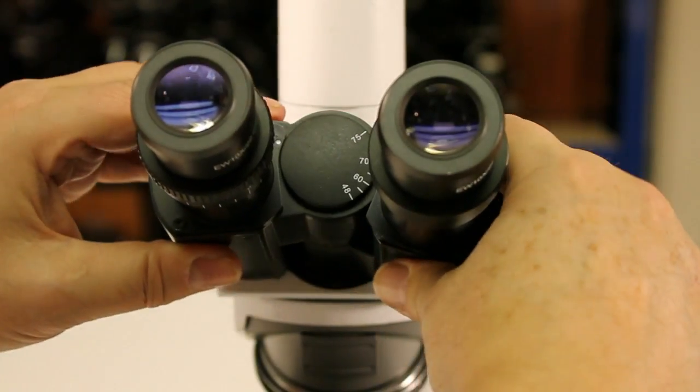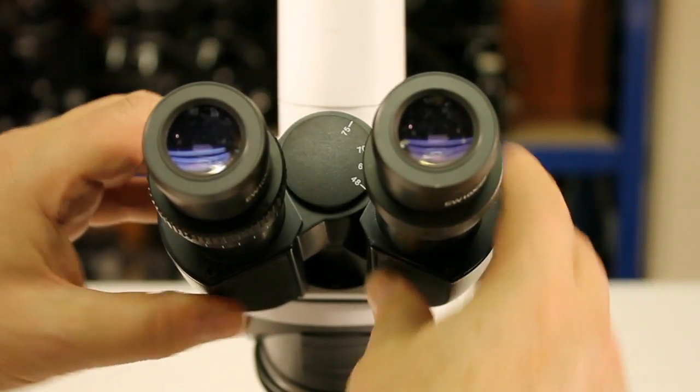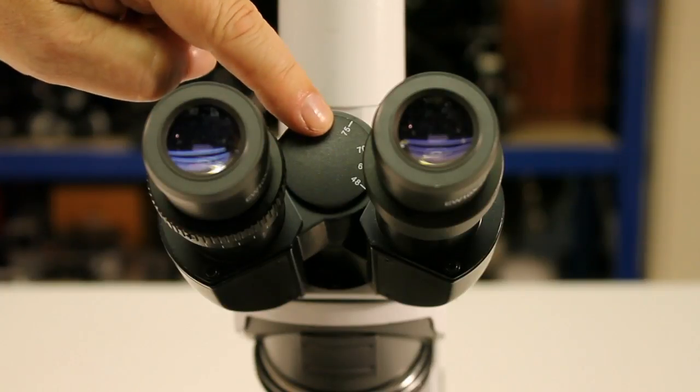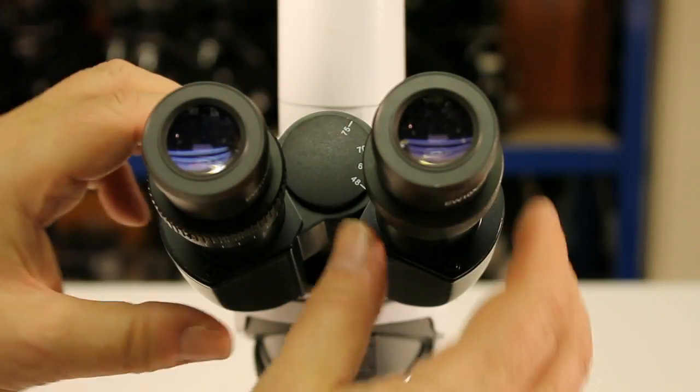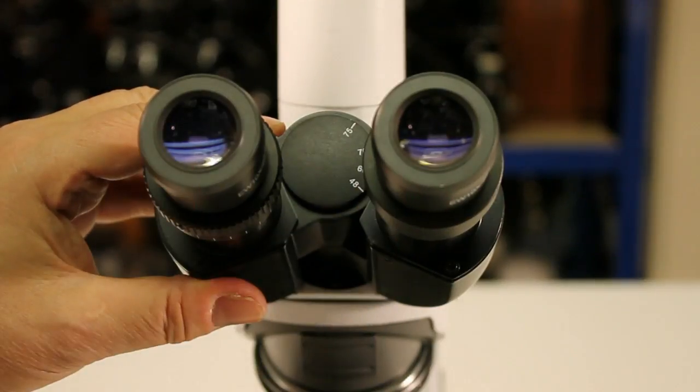Now the distance between the eye tubes has to be set to suit you as the individual. You can see there's a scale there running from 48 to 75, that's in millimeters and measures the distance between the center point of each of the eyepieces.